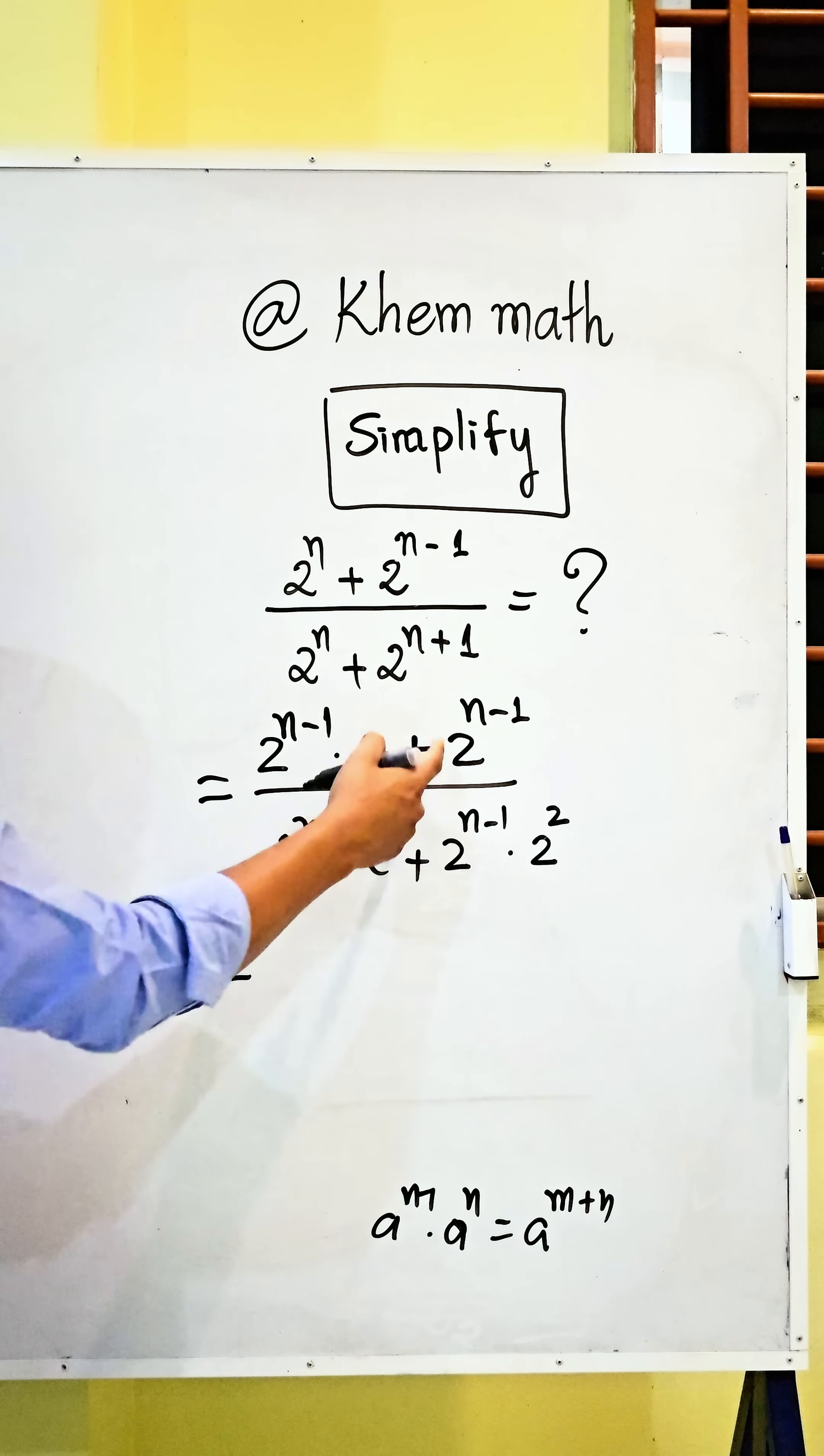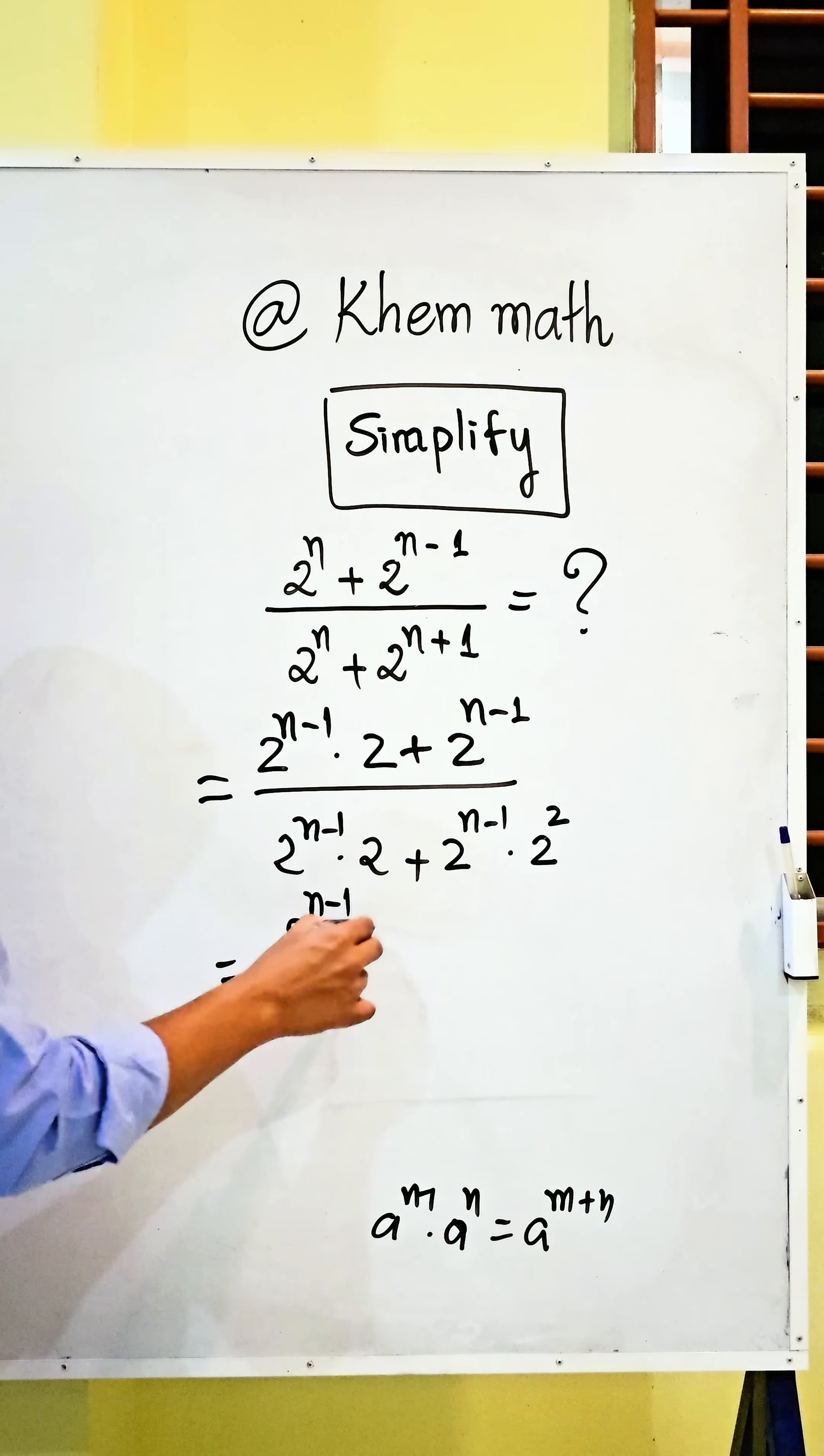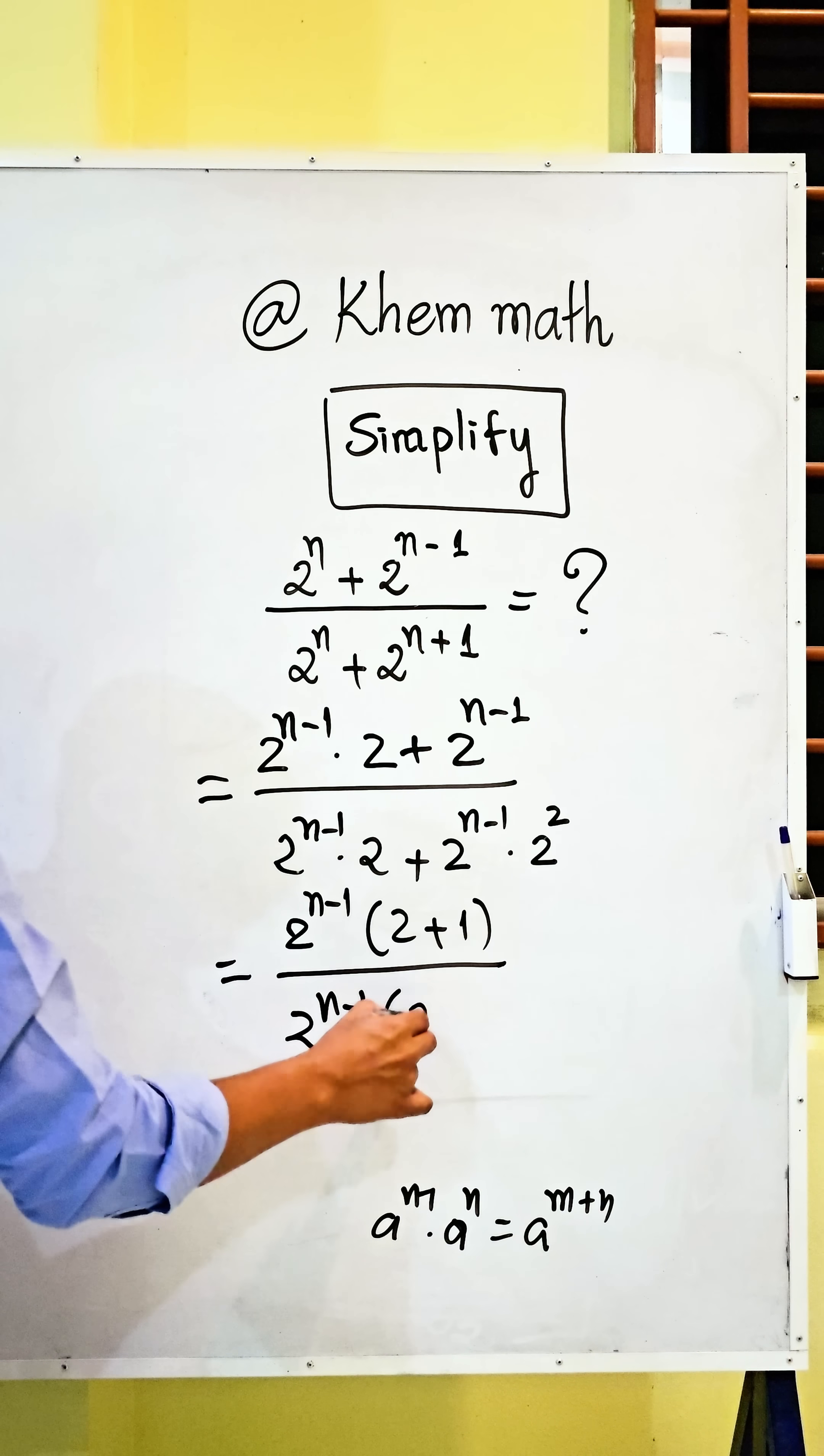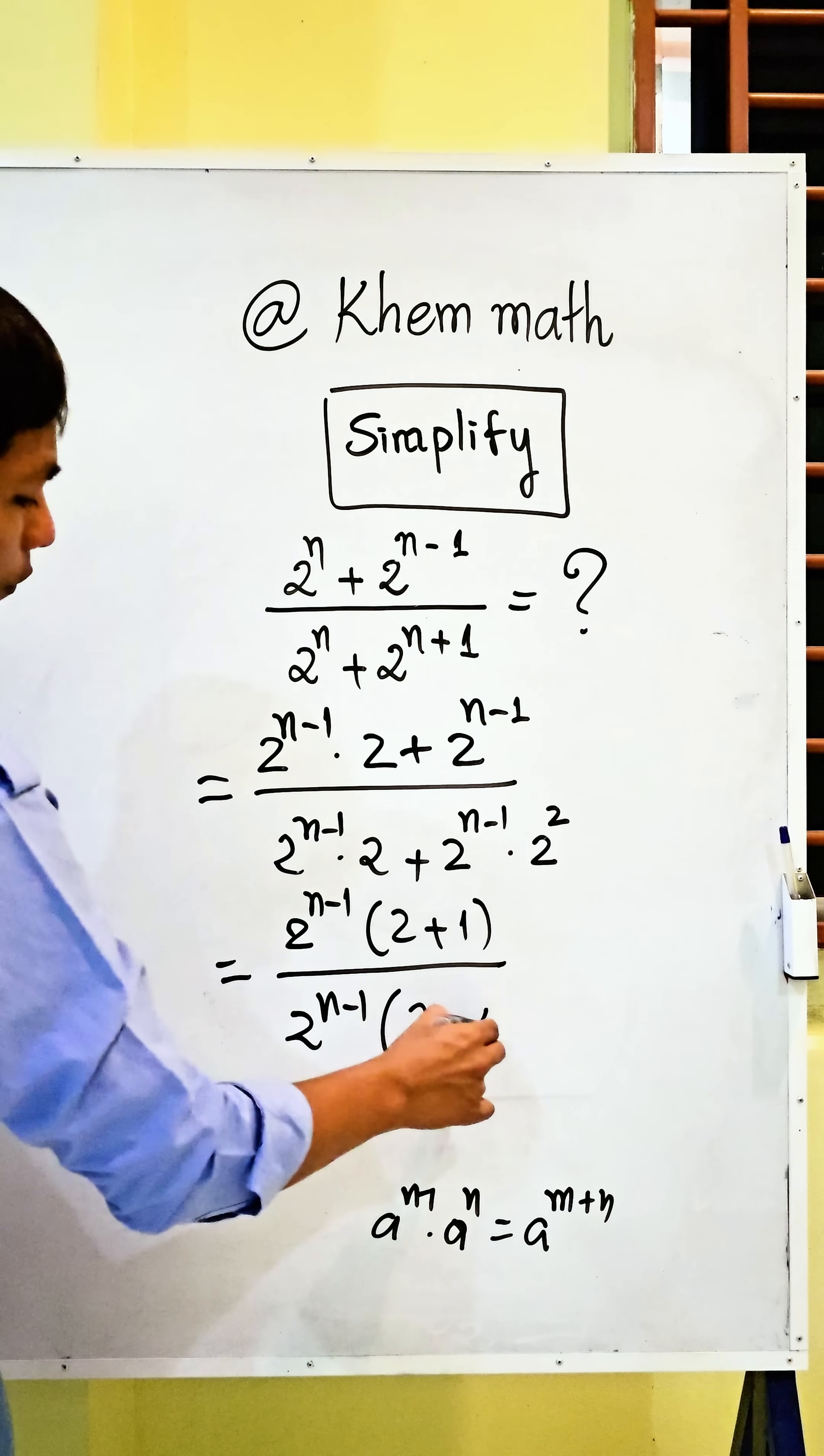We take the common factor. So we get 2 power n minus 1 times 2 plus 1. And divide, here we take 2 power n minus 1. We get 2 plus 2 squared equal to 4.